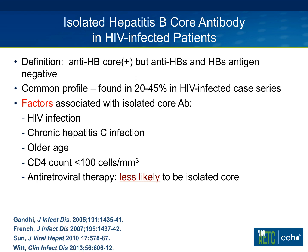The definition of an isolated core antibody is essentially when we send a hepatitis B panel — looking at surface antigen, surface antibody, and core antibody, which represents total IgM and IgG — an isolated core profile is someone who just has positive core antibody in the absence of a detectable surface antibody or surface antigen. Depending on the case series you look at, in an HIV population you can encounter this as often as 20 to 45 percent of the time.